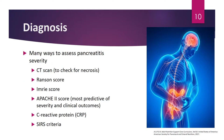Pancreatitis can be assessed and its severity determined using a CT scan to check for necrosis. Common scoring systems include the Ranson score, IMRIE score, and Apache 2 score. The Apache 2 score is a broad severity score that can predict mortality — the higher the score, the worse the prognosis. C-reactive protein can be used to assess inflammation alongside SIRS criteria.